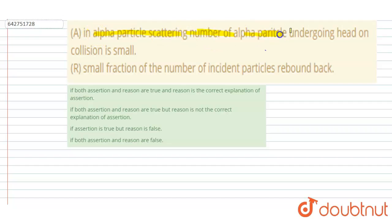The number of alpha particles undergoing head-on collision is small. So it is said that in alpha particle scattering, the number of alpha particles which goes head-on collision is very small. And in the second statement it is said that small fraction of the number of incident particles rebound back.